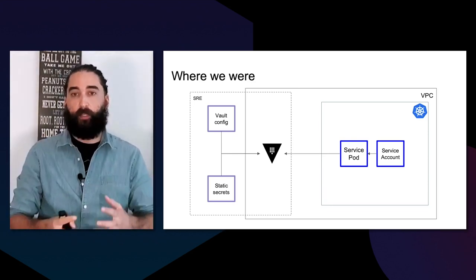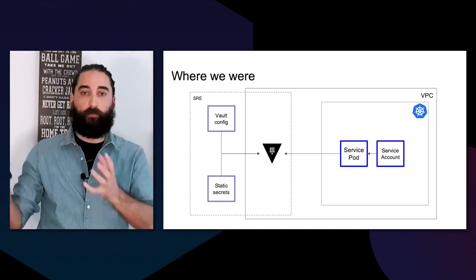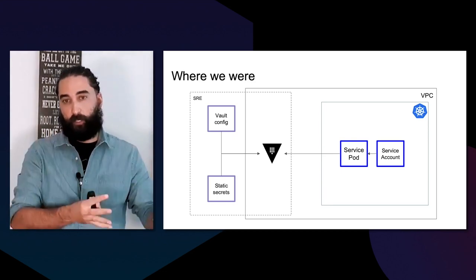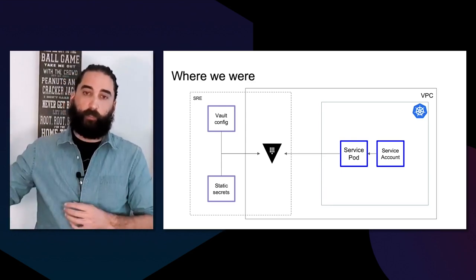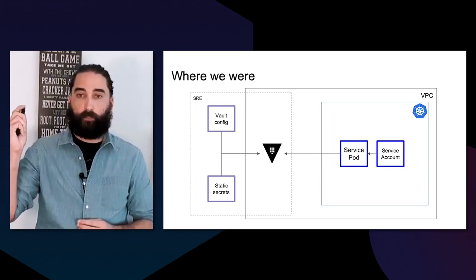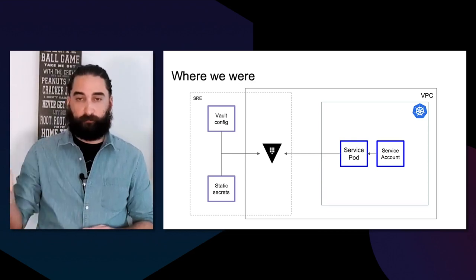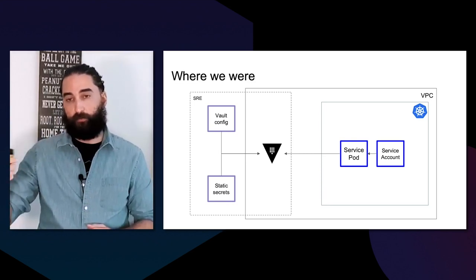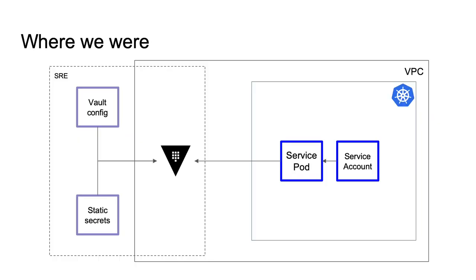We're an AWS shop, so there's a VPC with a network boundary, and our Kubernetes cluster was talking to Vault. Production workloads run with service account identities. The Kubernetes auth backend had just been released for Vault, so we could automatically use that authentication scheme. The SRE team was maintaining both the Vault configuration and the static secrets.